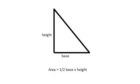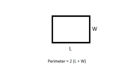The area of a triangle is one half of its base times its height. The perimeter of a rectangle is twice the length plus the width.